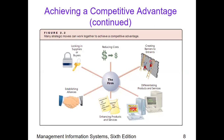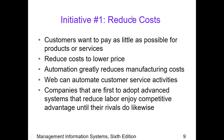Many strategic moves can work together to achieve competitive advantage, as shown in figure 2-2. For reduced costs, web can automate customer service activities, helping minimize the cost of marketing and order processing through the online platform. Those who first adopted advanced systems can reduce labor costs and therefore the overall cost of products. For barriers, less competition would be better — we can see this from telecommunications companies, since it is not easy to raise the capital required, in addition to application requirements and permits.